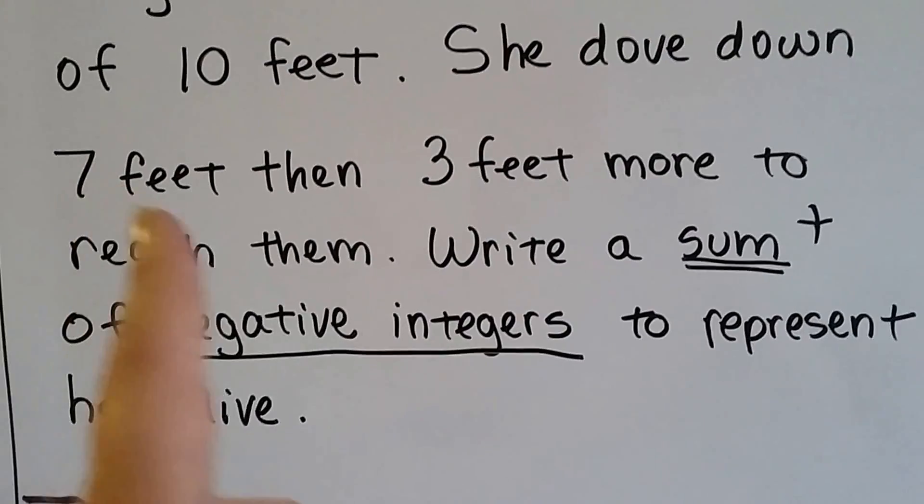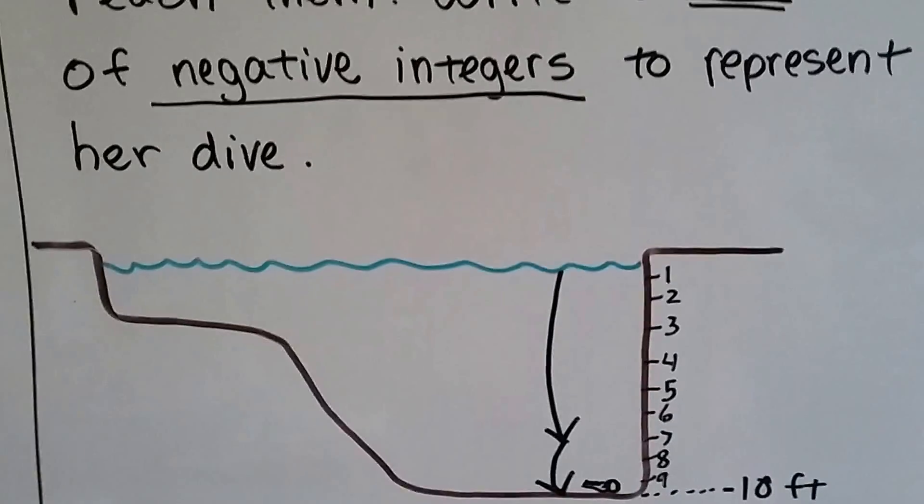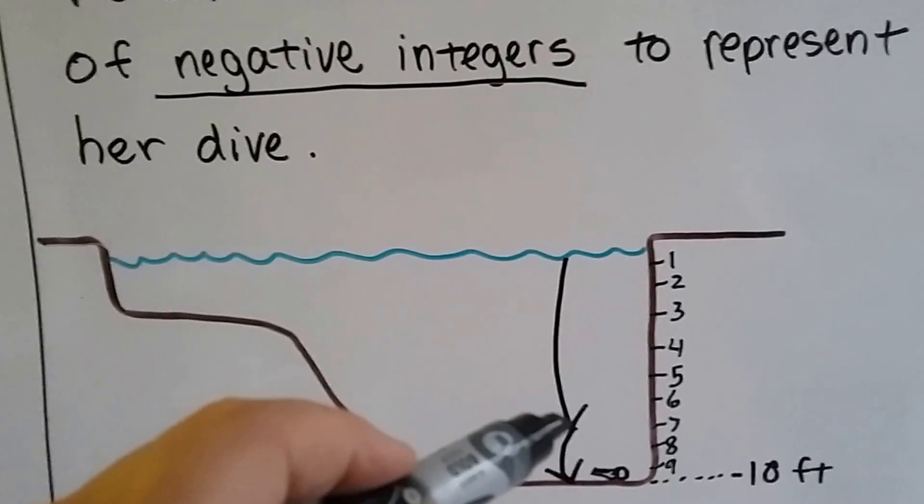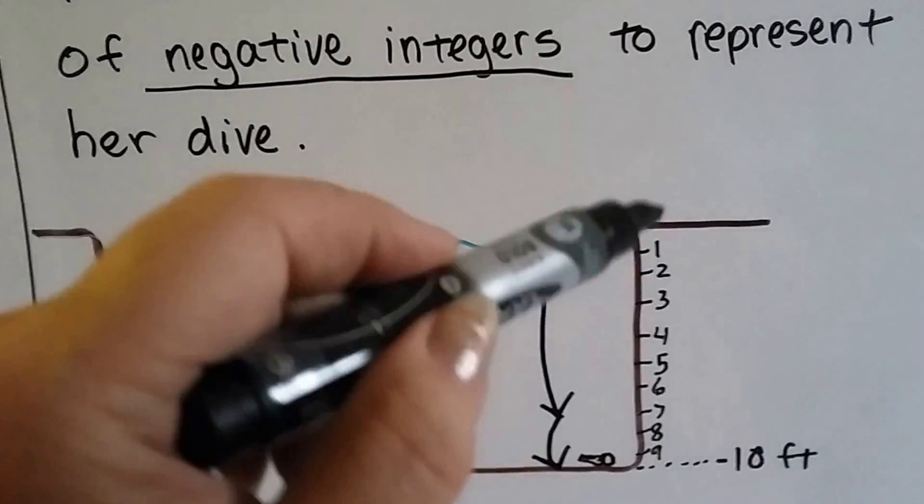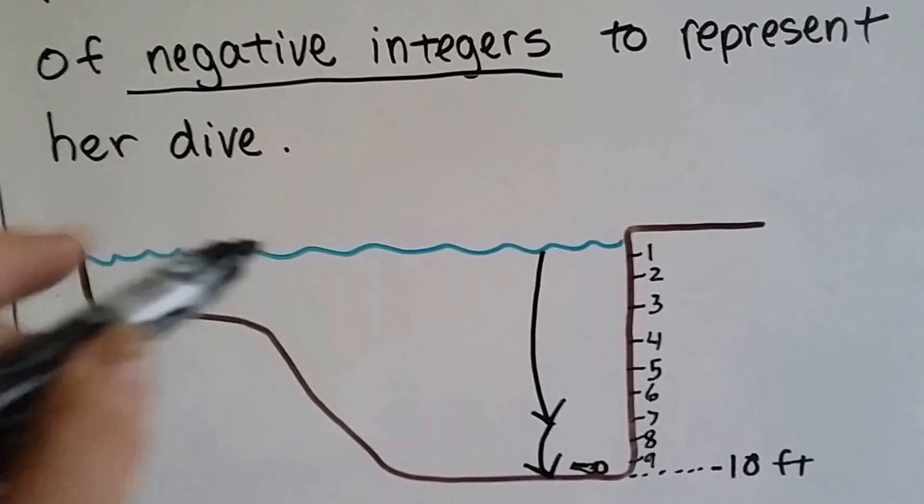So she dove down seven feet, then three feet. She dove down seven feet, then three feet, and then she got to a negative ten. Okay, because she's ten feet below the water level.